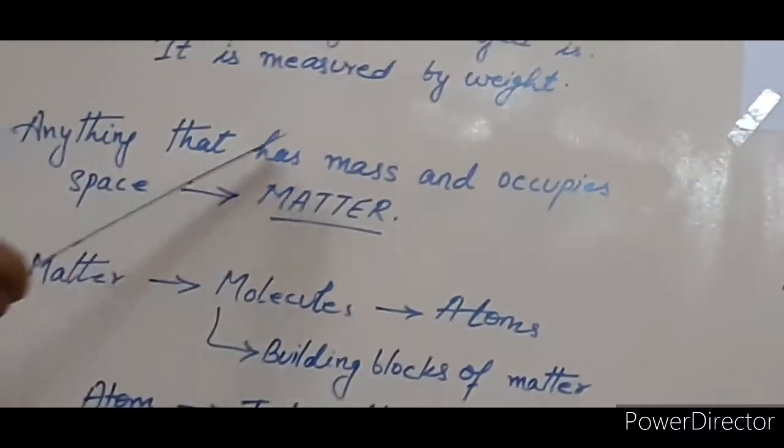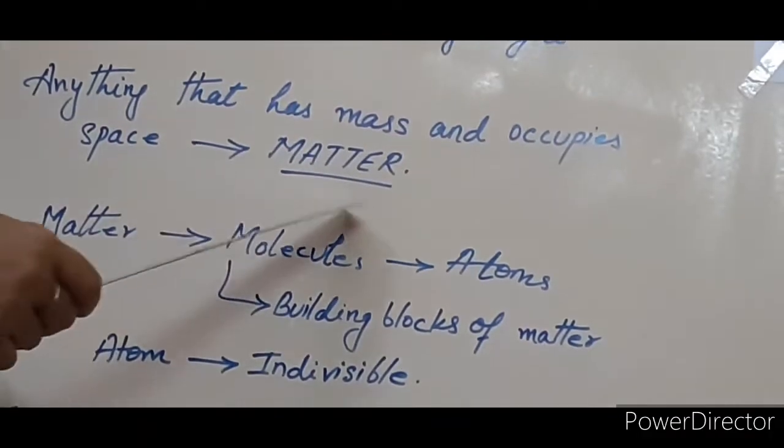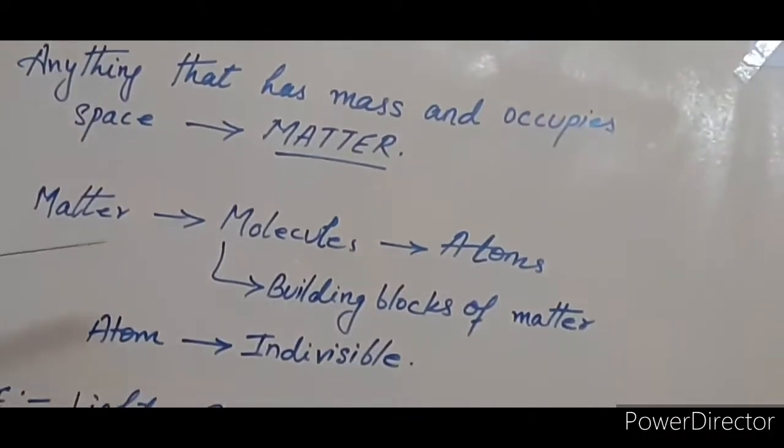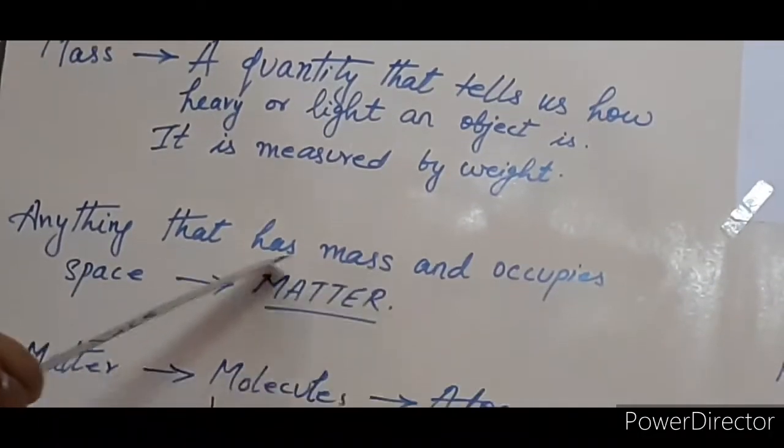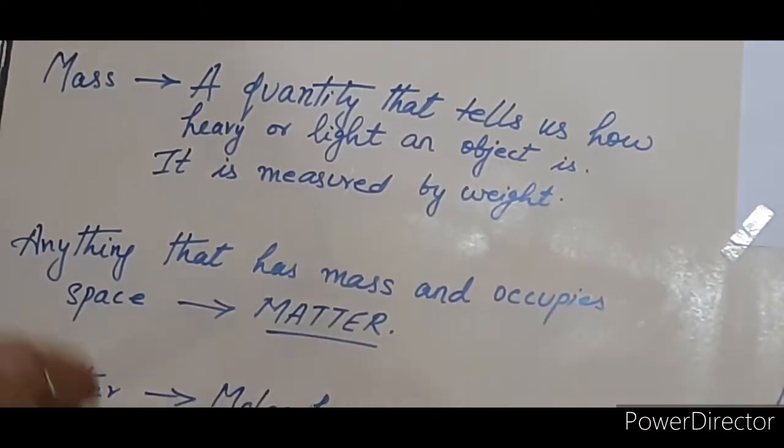So, anything that has mass and occupies space is called matter. I repeat, anything that has mass and occupies space is called matter. So this water bottle is matter, this book is matter, this ball is matter, this table is matter, this board is also matter.